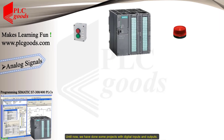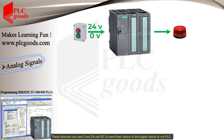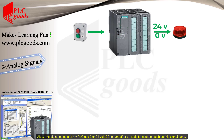Until now we have done some projects with digital inputs and outputs. At the beginning of this tutorial I explained my PLC hardware and also its wiring. We know digital sensors or push buttons have two states: on or off, open or closed. These devices can use zero and 24 volt DC to send their status to the digital inputs of my PLC, and the digital outputs also use zero or 24 volt DC.